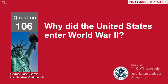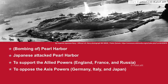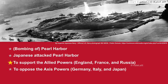Why did the United States enter World War II? Bombing of Pearl Harbor — the Japanese attacked Pearl Harbor. To support the Allied Powers — England, France, and Russia. To oppose the Axis Powers — Germany, Italy, and Japan.